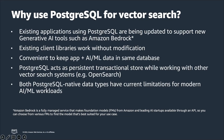You can choose from various foundation models to find the one best suited for your use case. With Postgres, existing client libraries work without any modifications — drivers like JDBC, ODBC, and other ORM frameworks. A big advantage is your ability to keep transactional as well as GenAI workloads in the same database, giving you benefits in query performance. Postgres can also act as a persistent transactional store while working in tandem with other vector search systems such as OpenSearch.